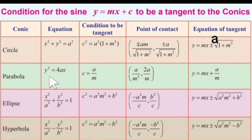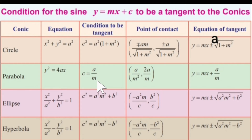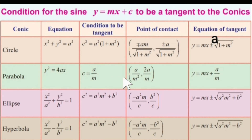For the parabola, consider y square equal to 4ax. The condition for tangency is c equal to a by m, where c is the y intercept and m is the slope of the straight line. If this condition is satisfied, the straight line is tangent to the parabola. The point of contact is a by m square, 2a by m.